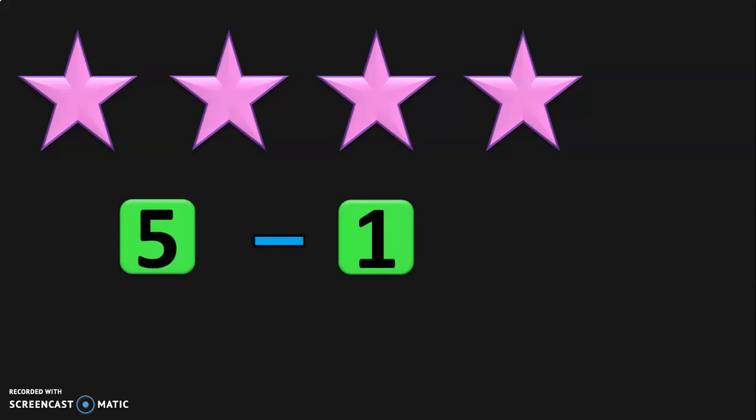What is the remaining number of stars with you now? Let us count. 1, 2, 3, 4. So you had 5 stars and your sister or your brother took away 1 star from you. The answer or the difference or the remaining number of stars with you now is 4. This is how you represent in numerical numbers. 5 minus 1 is equal to 4.